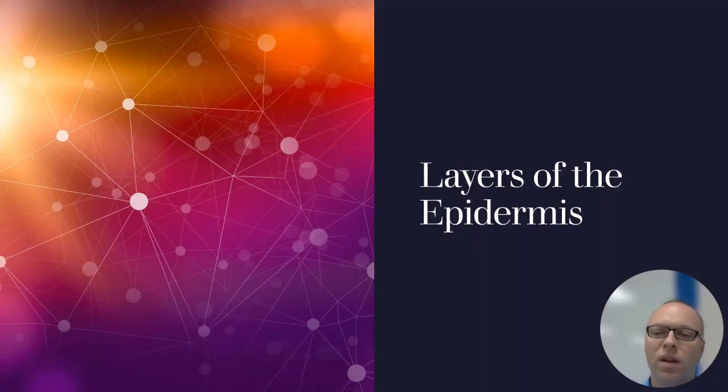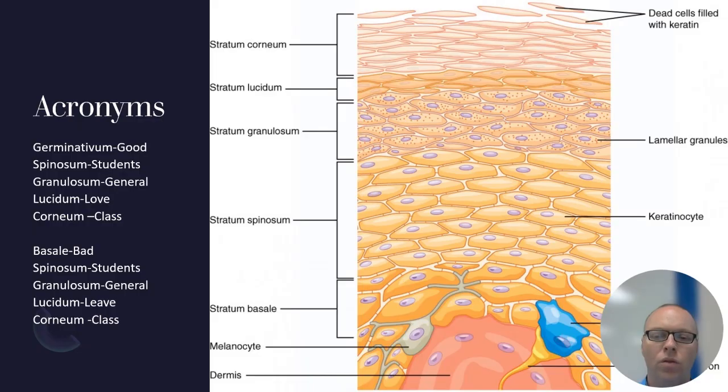All right guys, welcome back. Today we're going to be talking about the layers of the epidermis. So the epidermis is going to be all of this right here. It's going to have the stratum basale, also known as germinativum, spinosum, granulosum, lucidum, and corneum. So all these layers are coming together to form the epidermis.